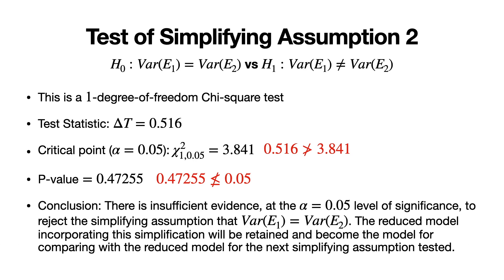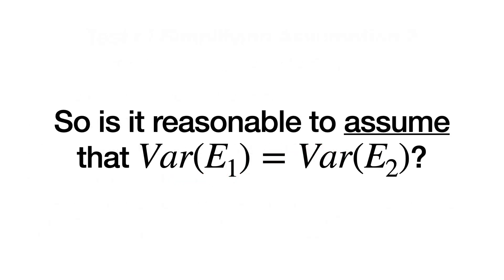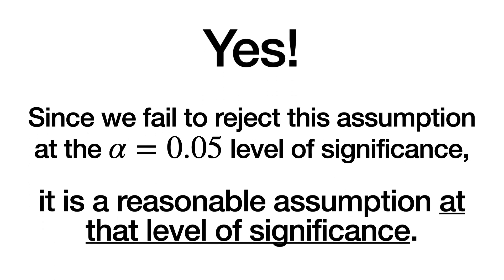There is insufficient evidence at the 0.05 level of significance to reject the simplifying assumption that the variances of E1 and E2 are equal. The reduced model incorporating this simplification will be retained and become the model for comparing with the reduced model for the next simplifying assumption tested. Since we failed to reject this assumption at the 0.05 level of significance, it is a reasonable assumption at that level of significance.